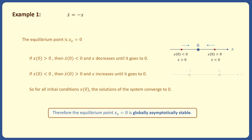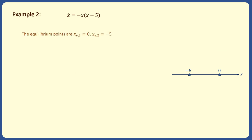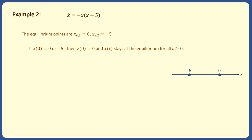In the second example, consider another first-order non-linear system which has two equilibrium points at 0 and -5. If the initial condition is at any of the equilibrium points, then x_dot = 0, and therefore x stays at the equilibrium point for all time. Since the system has more than one equilibrium point, none of the equilibrium points can be globally asymptotically stable. This is because trajectories starting from an equilibrium point remain there for all time, so it's not possible that all trajectories converge to one equilibrium point.